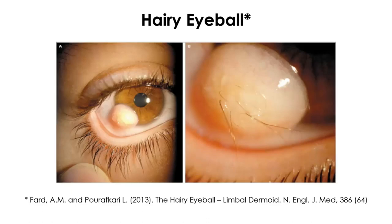The intraocular pressure was normal. Although this type of tumor isn't typically harmful and cancerous, it can grow cartilage, hair, and sometimes even sweat glands. Not everyone with these tumors wants to remove it, but doctors did remove the hairy tumor from the man's eye. As expected, there was a little improvement in visual acuity after surgery because of amblyopia-induced astigmatism.